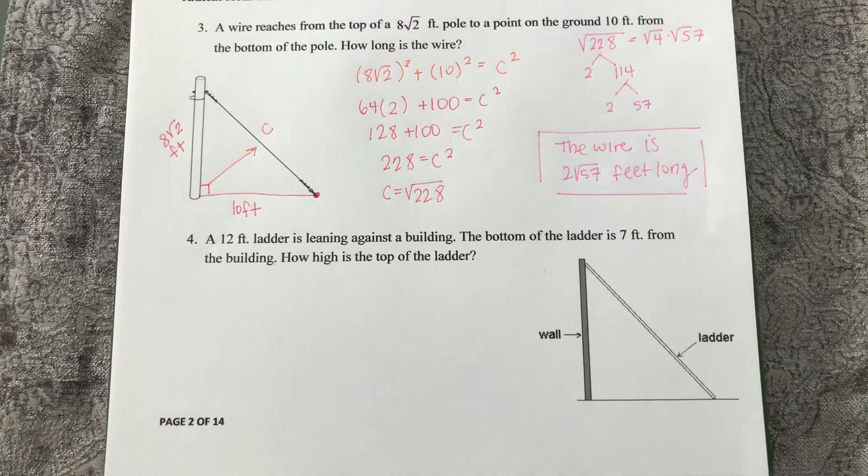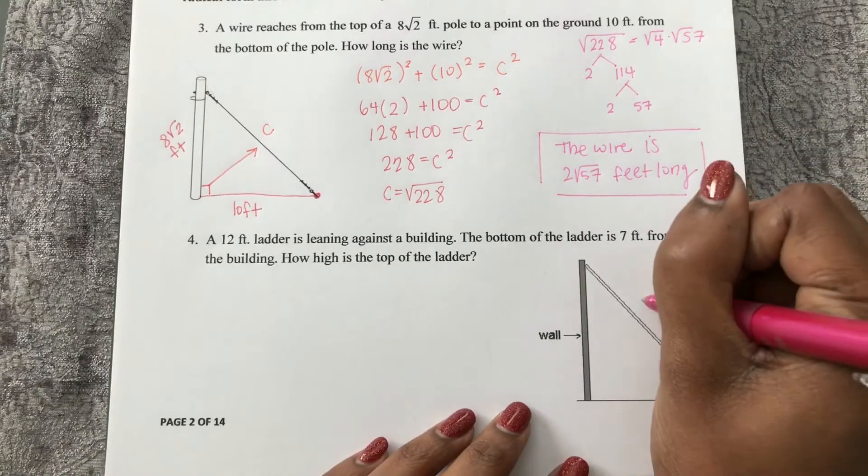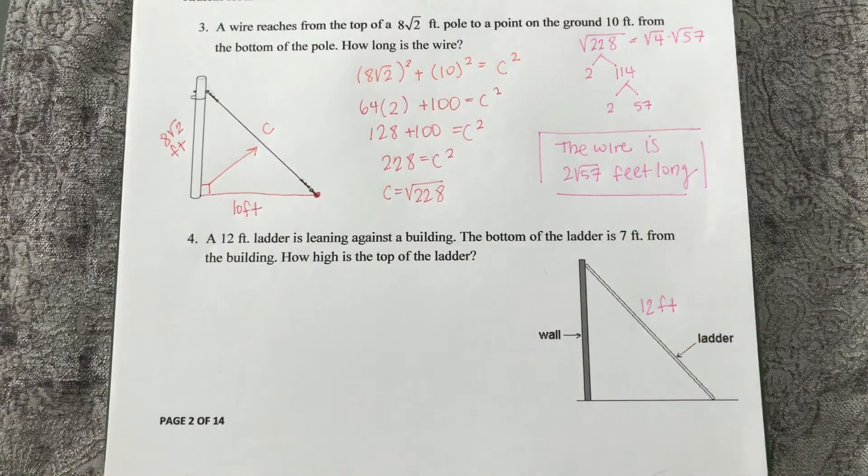Here in example four, there's a 12-foot ladder leaning against the building. So here's the ladder. We know it's 12 feet long. It's leaning against the building.